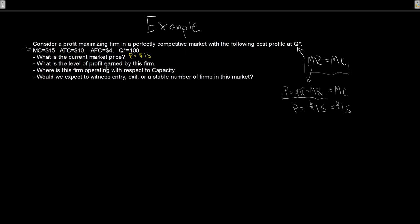Second one there, what is the level of profit earned by this firm? Profit is total revenue minus total cost. Or, we could write it this way, is price minus average total cost times our Q star. If we think about it this way, what do we have?